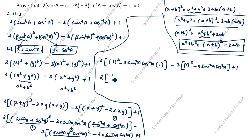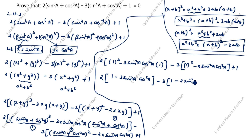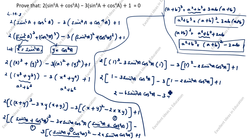Now multiply inside the brackets: 2 × 1 = 2, minus 2 × 3 = 6, so we get 2 − 6 sin²a cos²a. Then minus 3 × 1 = −3, and minus times minus gives plus 3 × 2 = 6 sin²a cos²a. Plus 1. Combining: 2 − 6 sin²a cos²a − 3 + 6 sin²a cos²a + 1. The −6 sin²a cos²a and +6 sin²a cos²a cancel, and 2 − 3 + 1 = 0. Therefore LHS = RHS = 0.